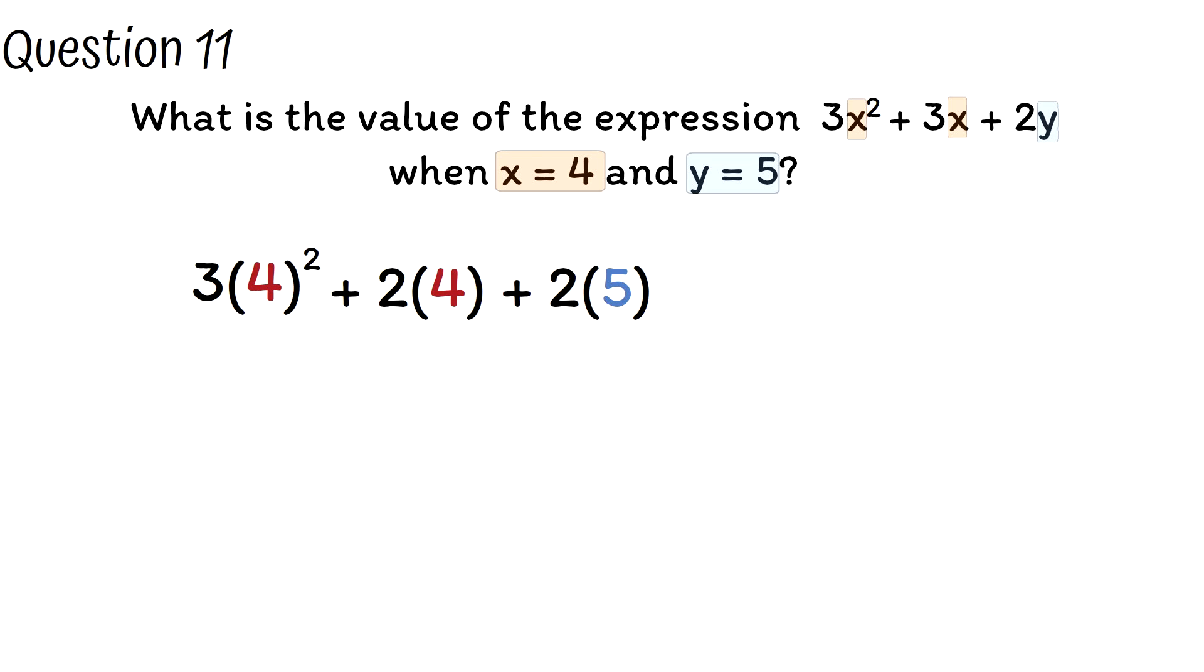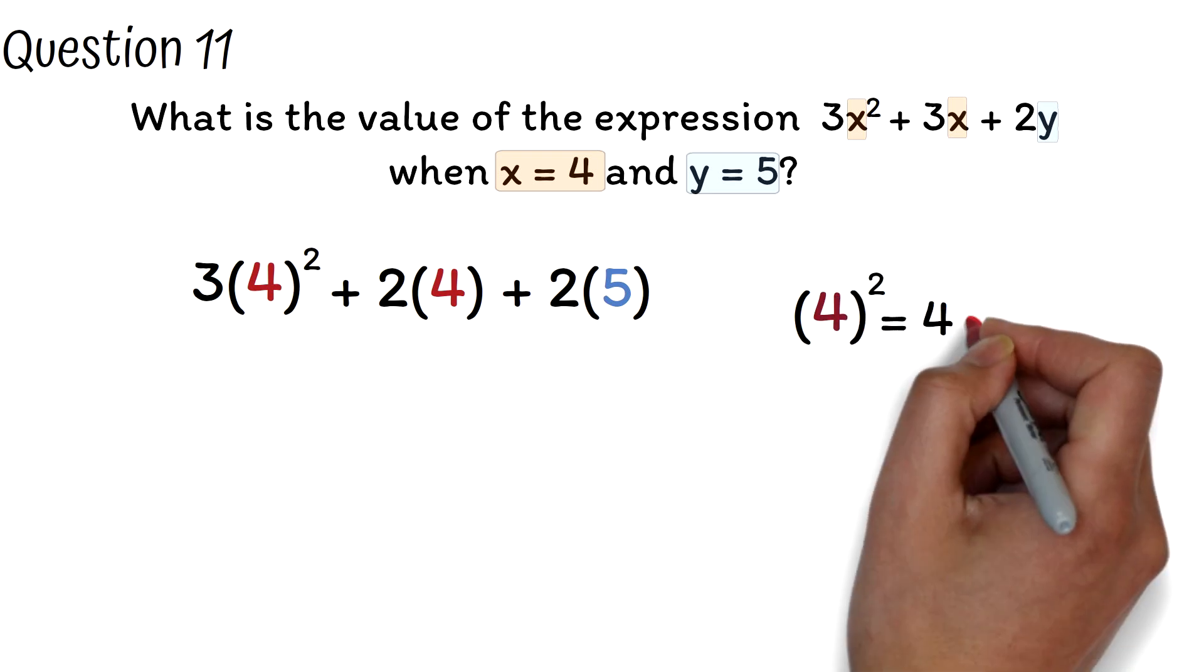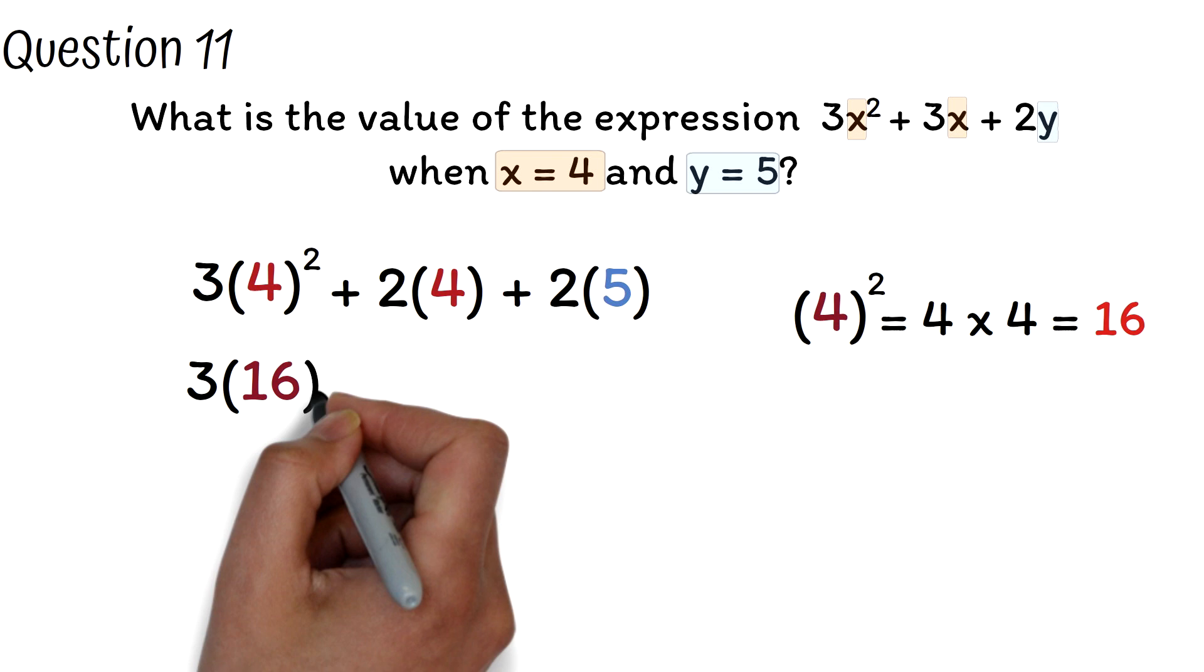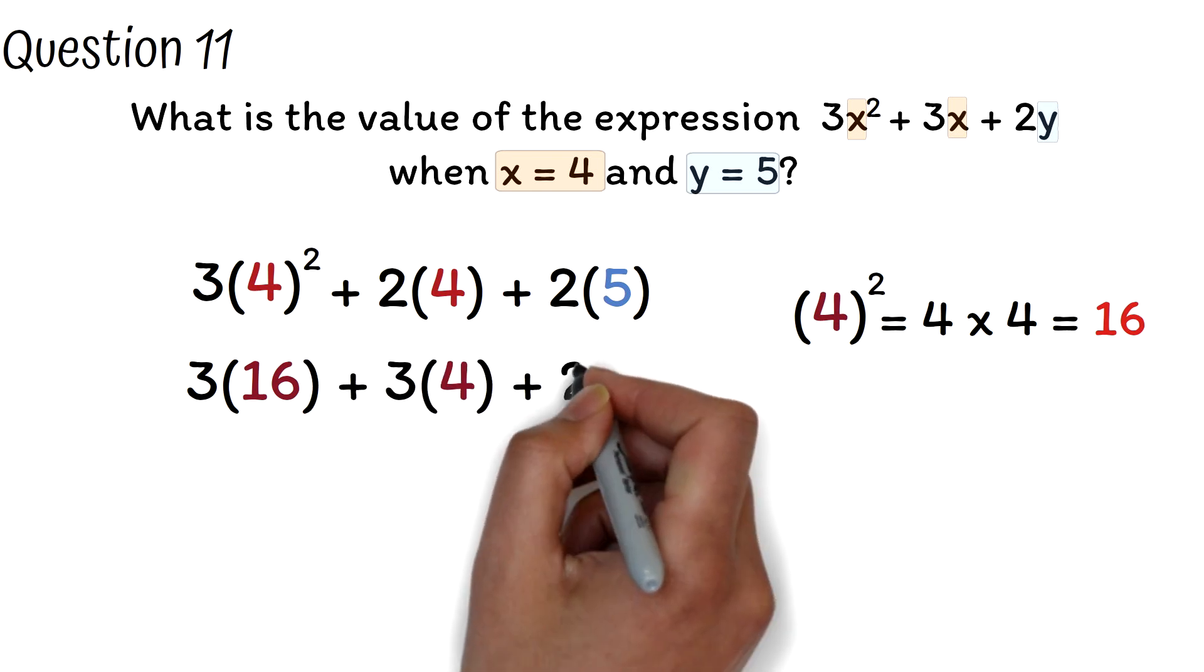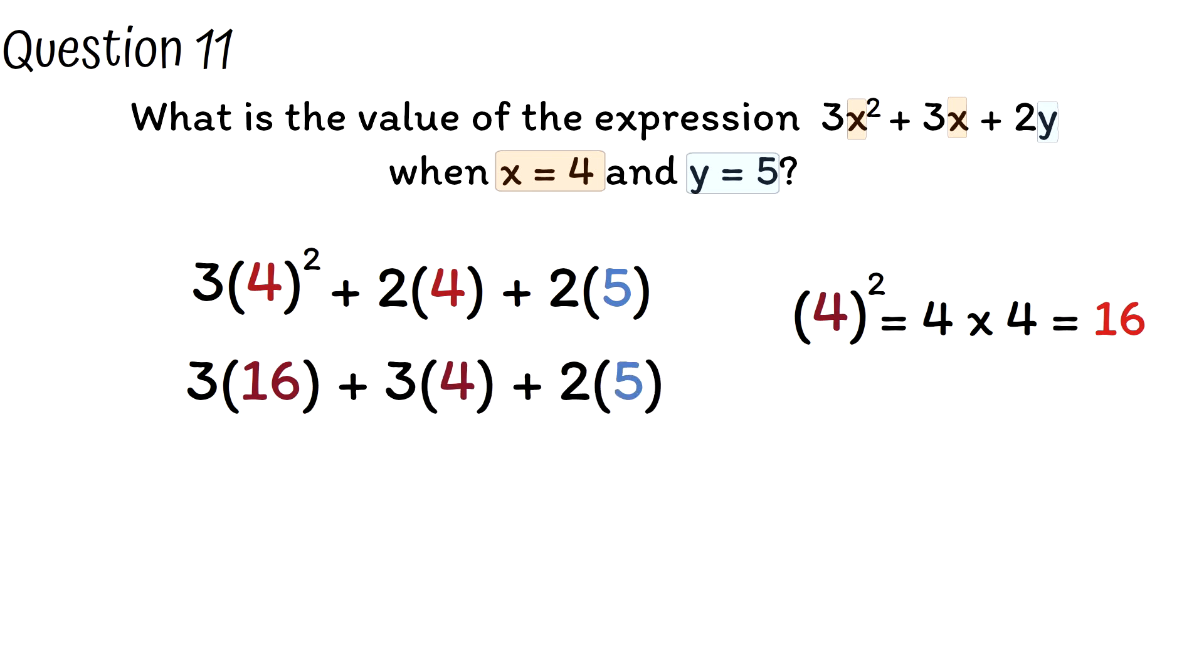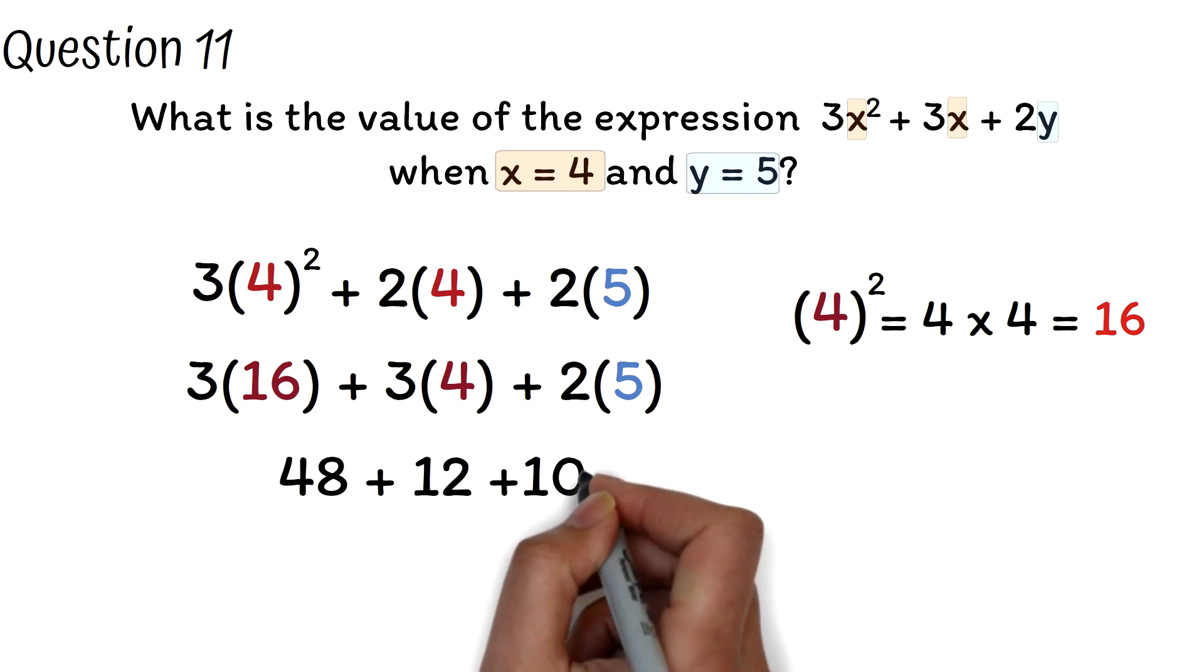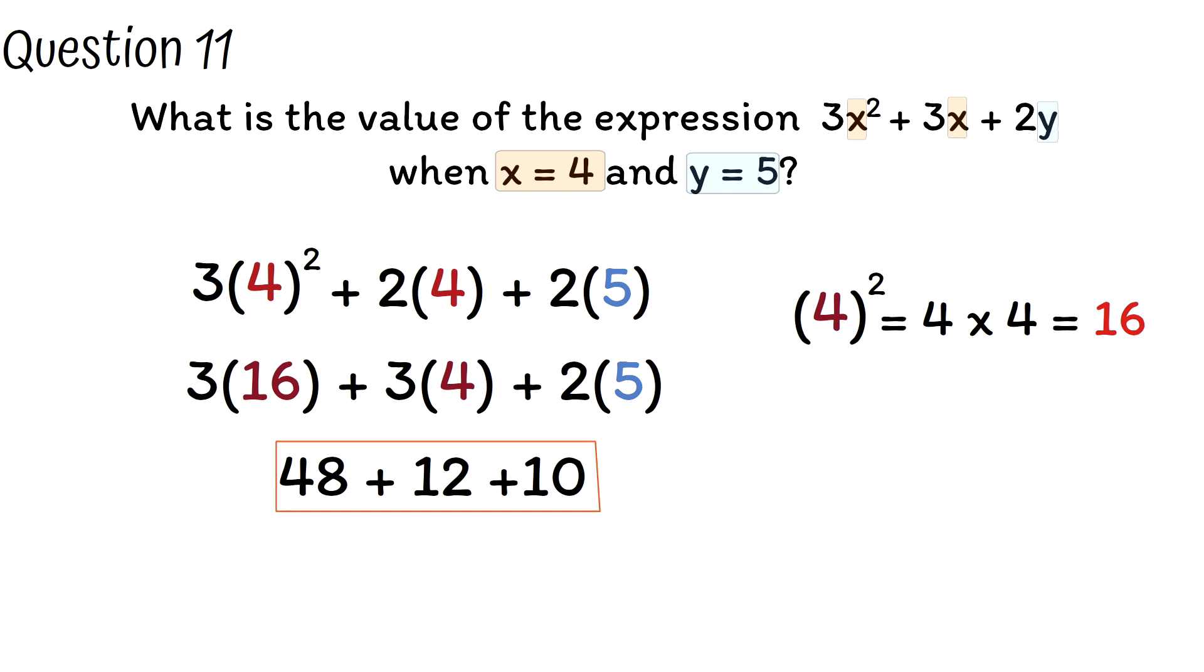By order of operation, we have to perform the exponent first. 4 squared, which is 4 times 4, is 16. Now we have 3 times 16 plus 3 times 4 plus 2 times 5. 3 multiplied by 16 is 48, 3 by 4 is 12, and 2 by 5 is 10. We add 48 plus 12 plus 10. This will give us 70 as the value of the expression.